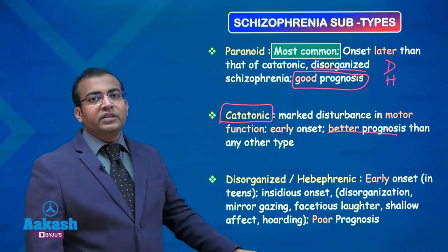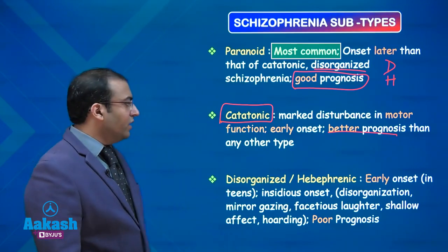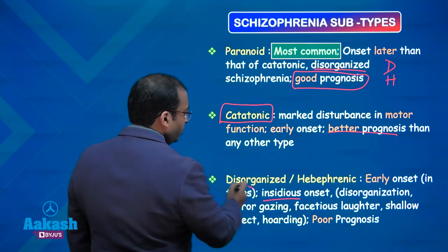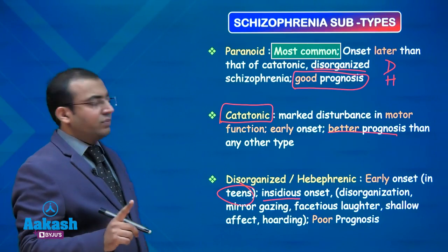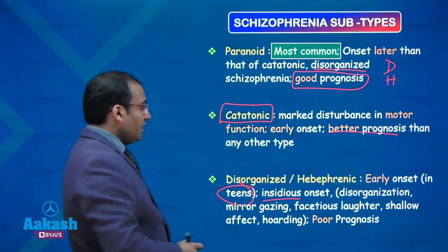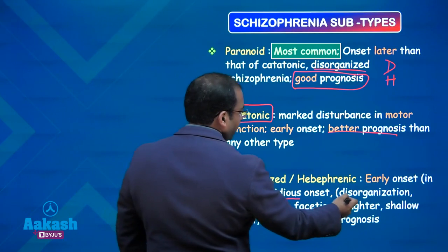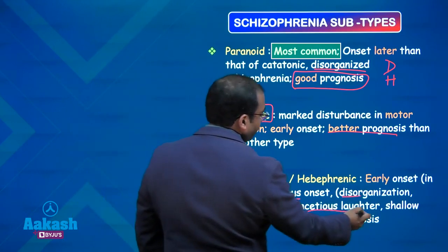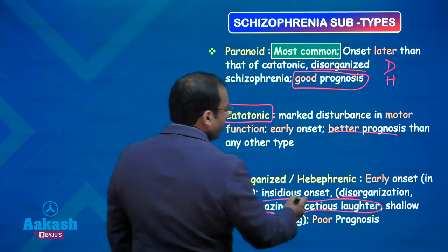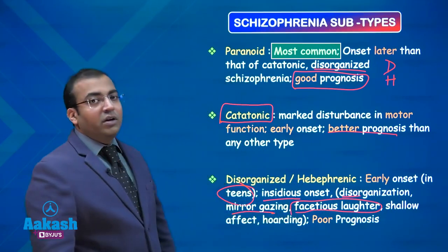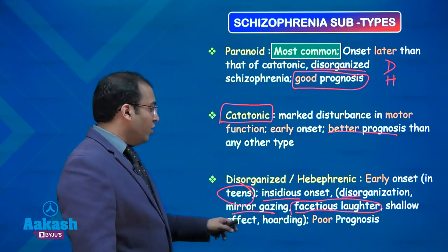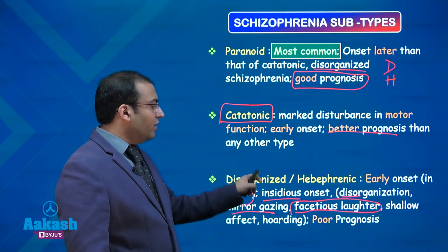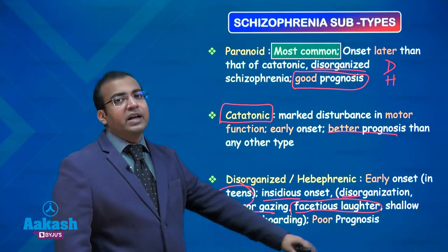Then there is the entity called hebephrenia or disorganized schizophrenia. Here, the patient has an insidious onset early in age, usually teenage, with affective symptoms. The person has disorganization in affective responses. Mirror gazing and a fatuous laughter — an abnormal laughter in an abnormal situation — will be seen, along with shallow affect where the affective responses lack depth. The phenomenon of hoarding will also be seen here, and it has a poor prognosis.